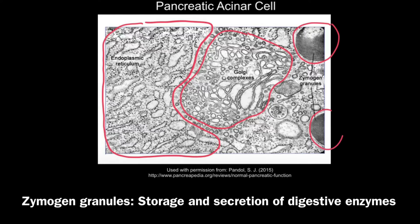Finally, the feature that really gives away that this is a pancreatic acinar cell: these are zymogen granules, used for the storage and secretion of digestive enzymes such as pancreatic amylase. Zymogen granules undergo exocytosis to release the digestive enzymes from the pancreas.